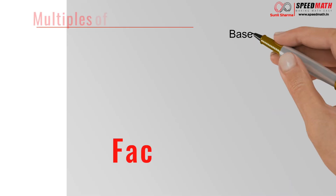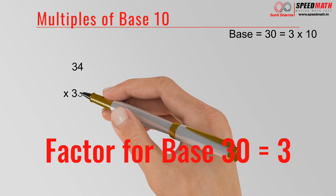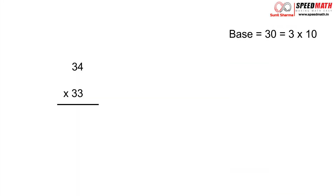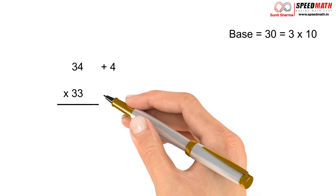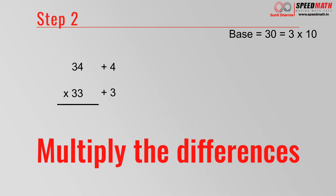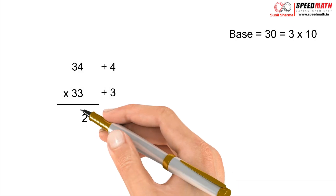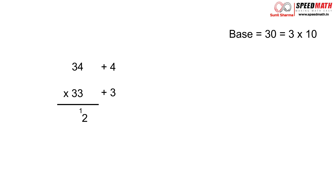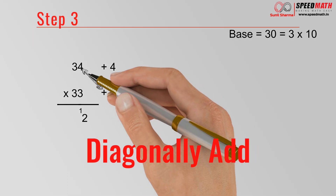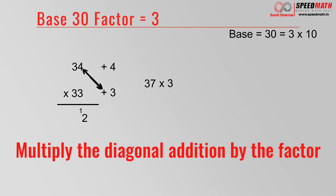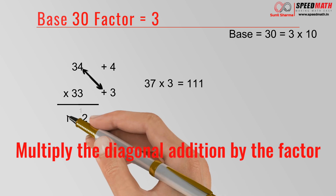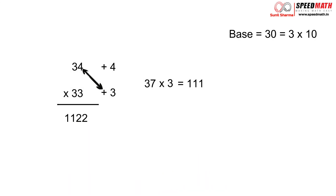Let's take base 30. The factor here is 3. Multiply 34 and 33: 34 is 4 more than 30, and 33 is 3 more than 30. Product of 4 and 3 is 12 — keep 2, carry forward 1. Diagonally add 34 and 3 to get 37; multiply by the factor 3, giving 111. Add the carry forward 1 to get 112. So 34 × 33 = 1122.